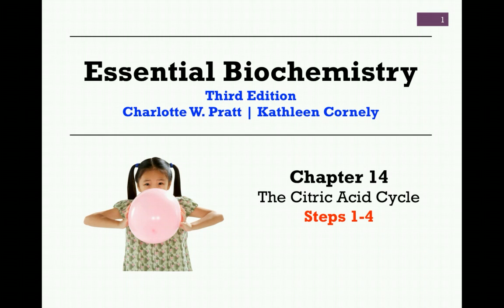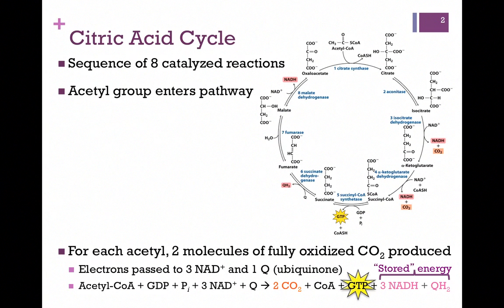In our next lesson from Chapter 14, we want to consider the first four steps of the citric acid cycle. Here's an overview of that cycle. It's a sequence of eight catalyzed reactions. It's cyclic in nature, and that's distinct from the other pathways we've looked at. In the linear pathways we've examined thus far, we began with a certain substrate and ended with a distinct and different product. In this cycle, we begin and end at the same point.